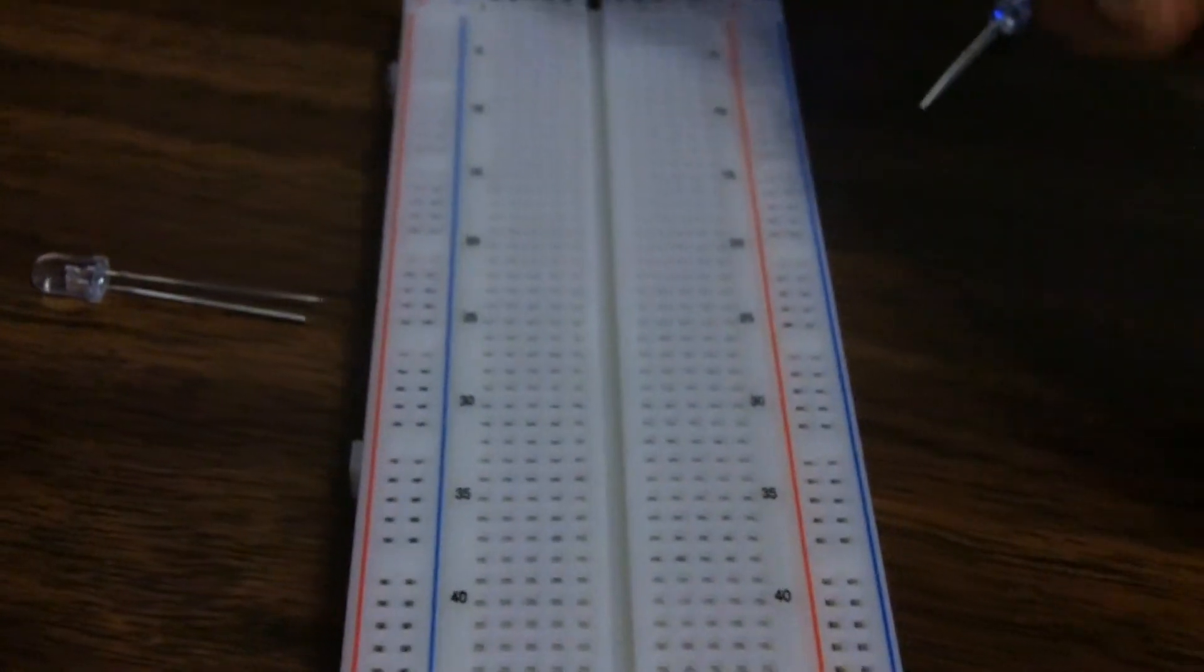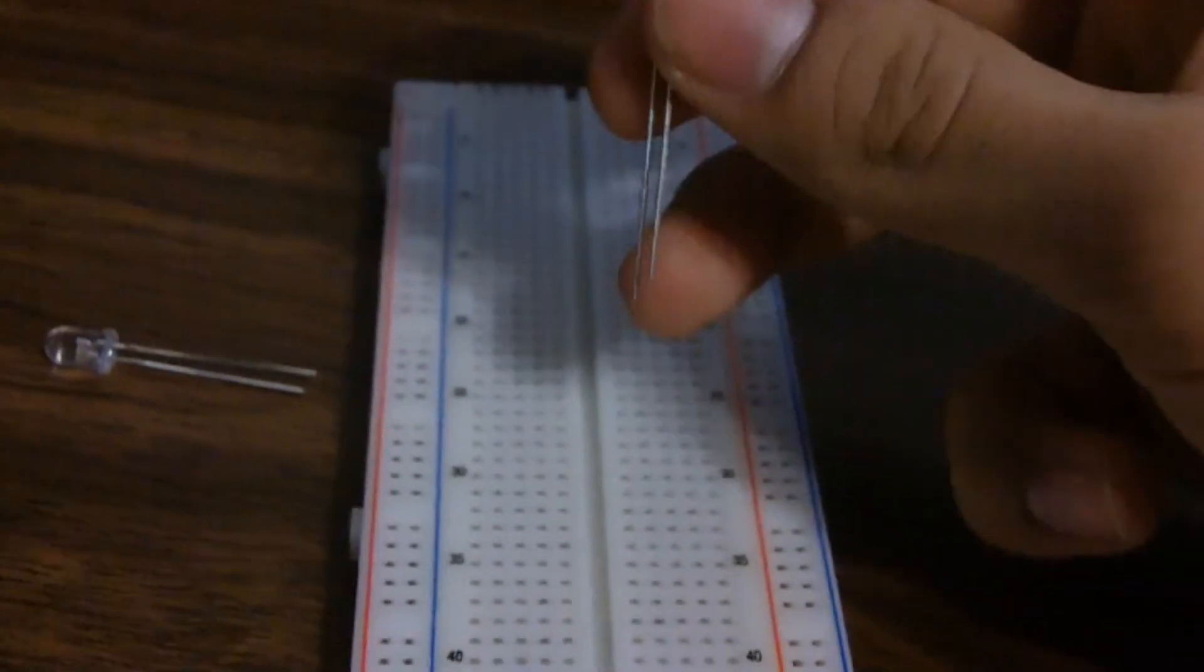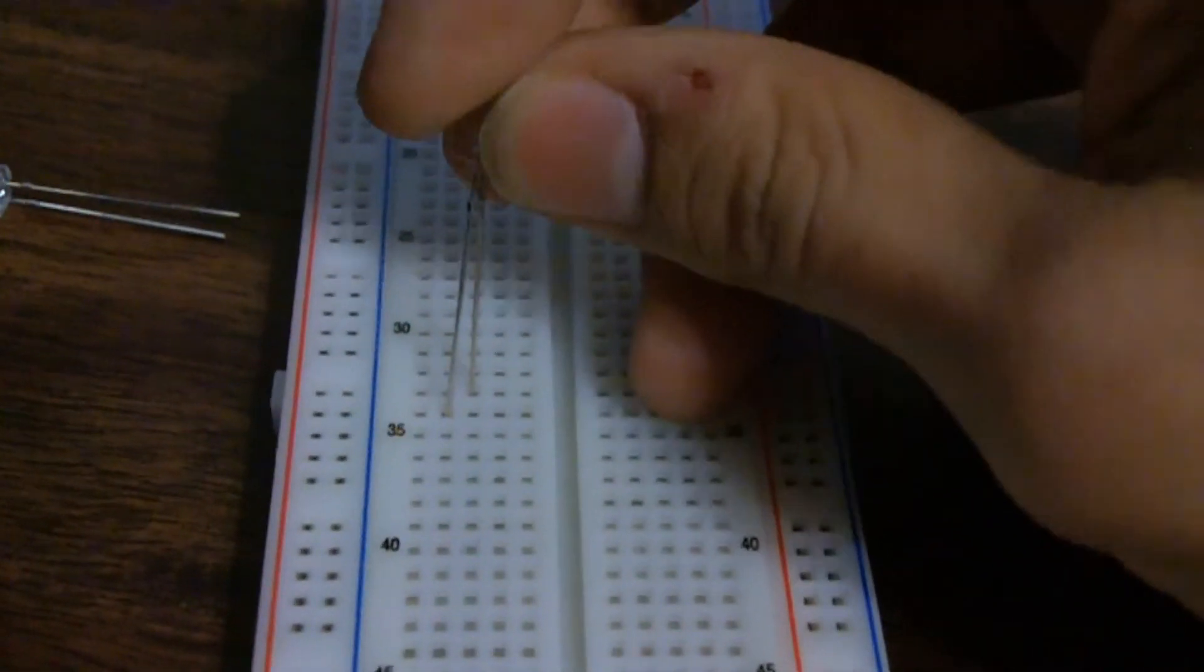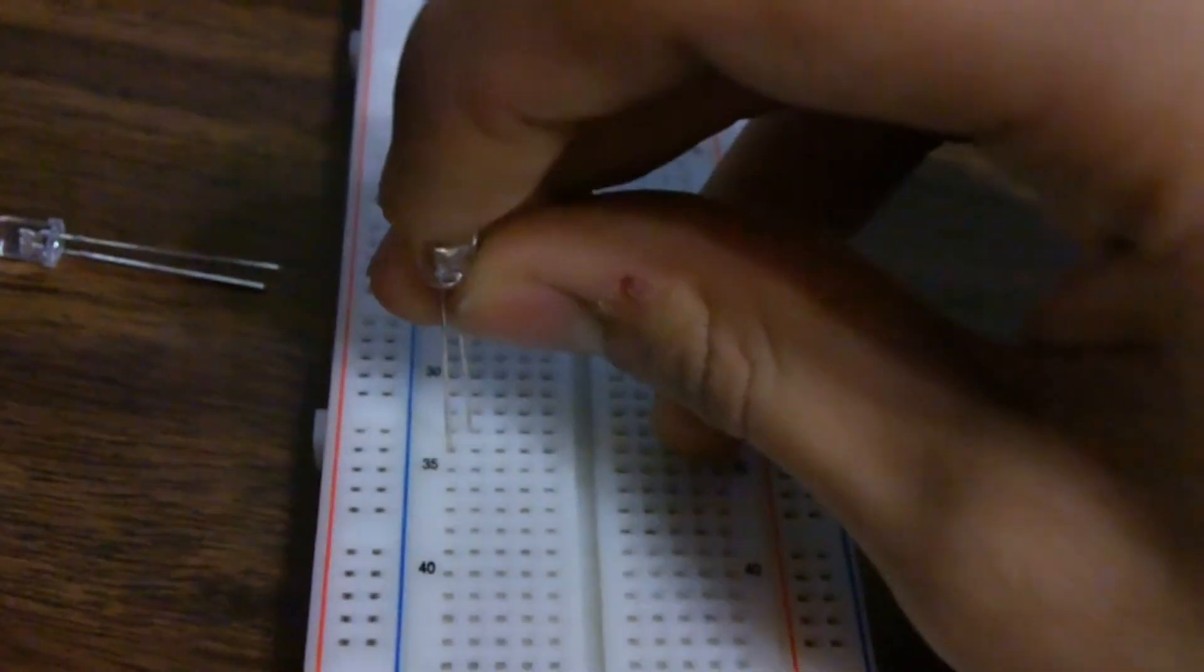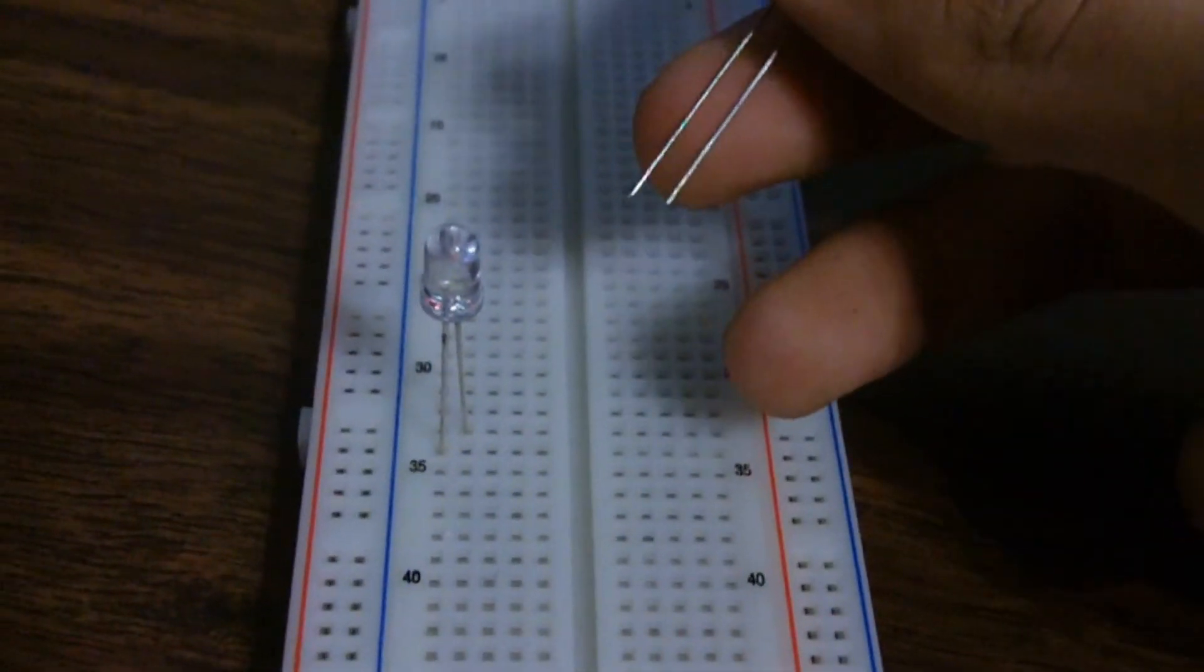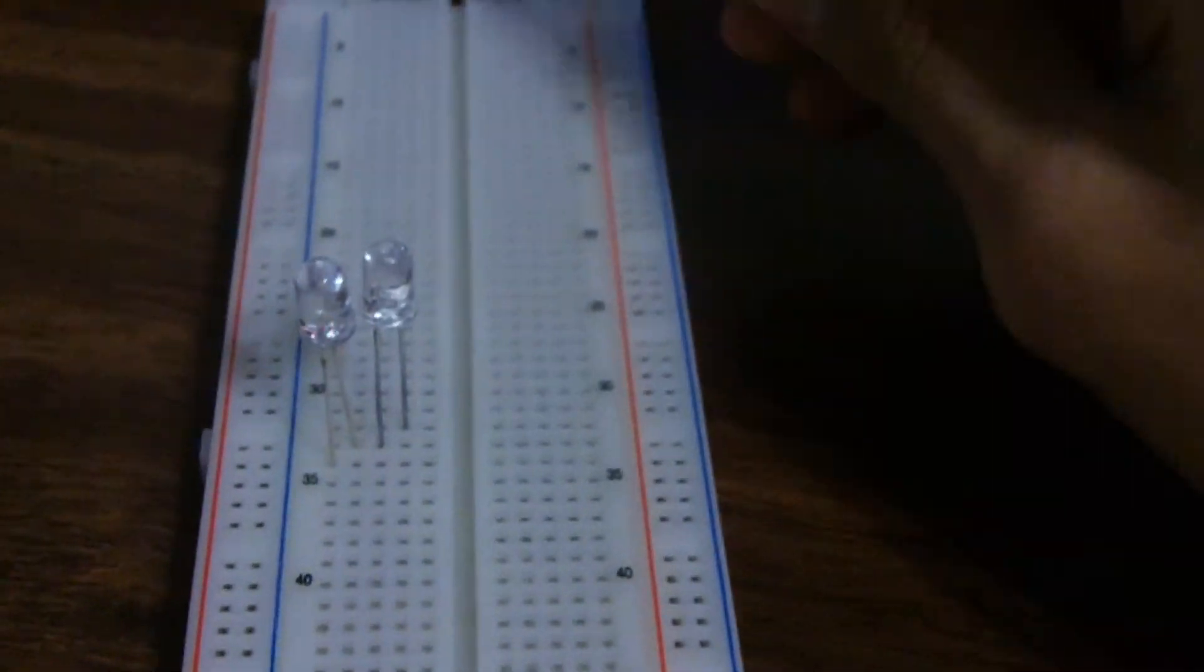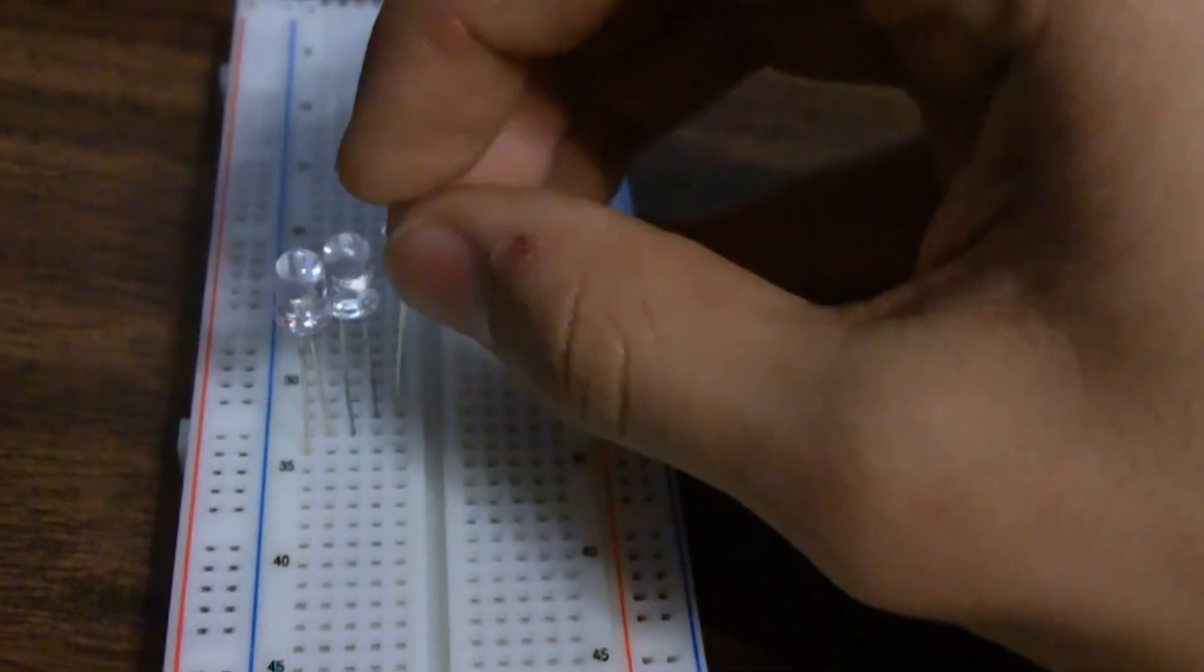So what we're going to do is take one of the LEDs, and we know that this side's negative and this side's positive. So we're going to put the positive on one row and the negative on another row. And you can start from here so you have enough room for the other one. You just want to stick it in like that, and then take another LED, take the positive, attach it to the negative by putting them on the same row, and then put the negative on the next row over. And then take the last LED and put the positive to the negative of this one, and the negative on another row.